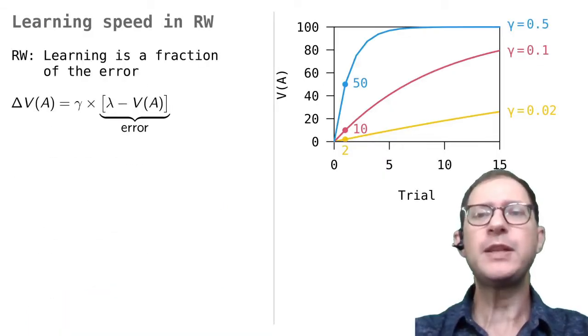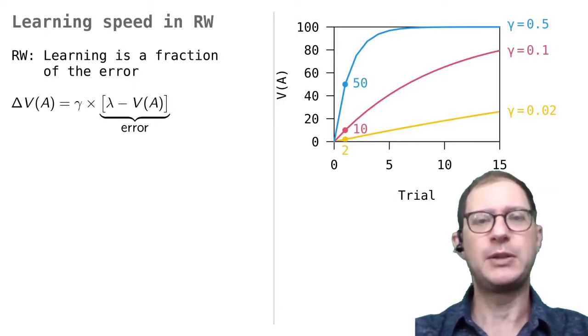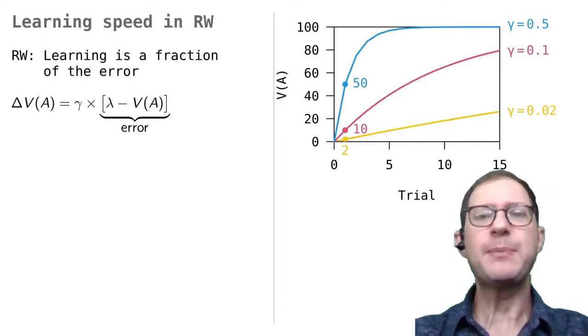Let's now talk about how learning speed works in the Rescola-Wagner model. As a quick refresher of how RW works, remember that the change in the associative strength of a CS is a fraction of the error that is perceived when the CS itself is followed by the US. Here, the CS is labeled as stimulus A. Please review the lesson introduced in the Rescola-Wagner model if you are not familiar with this idea.